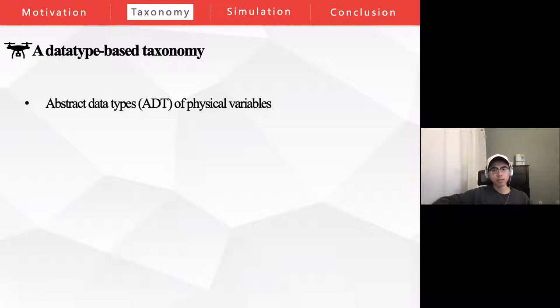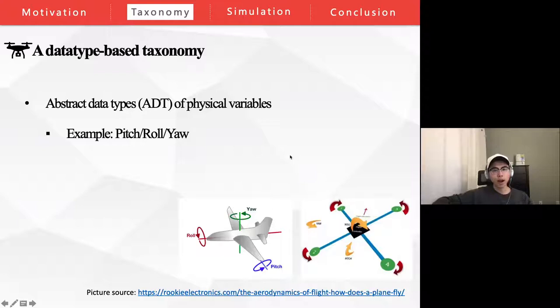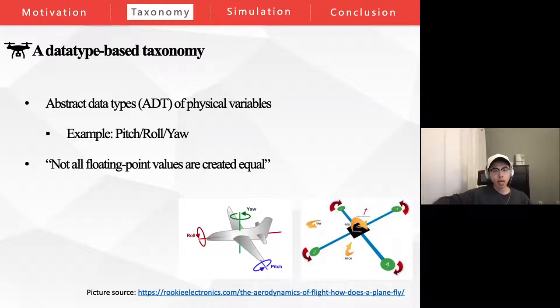After identifying the BF instances using PBF detector, there is an interesting observation that the BVs fall into a small set of physical variables. For example, a large number of float-type variables represent the pose of a UAV — the pitch, the roll, and the yaw. From the view of abstract data type, these float values logically encapsulate the floating number and a specification on what a pitch, roll, or yaw parameter should conform to. In this study, we classify our BF instances based on the logical data types of their corresponding BVs.